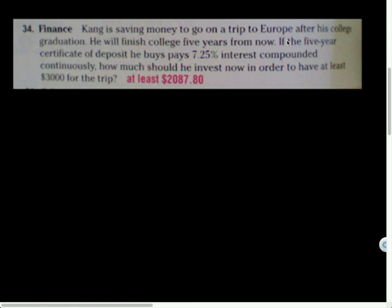Kang is saving money on a trip to go to Europe after his college graduation. He will finish college five years from now. If the five-year certificate of deposit he buys pays 7.25% interest compounded continuously. Whoa! We just heard some facts. So I heard that r is equal to 0.0725. And it's compounded continuously. So that tells me I'm not going to use the other formulas. I'm going to use A = Pe^rt. A equals P times E to the RT. Is the continuously compounded interest function formula.